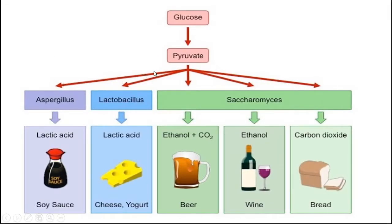This slide shows how glucose undergoes fermentation to produce pyruvate, which then undergoes fermentation by different microbes. Aspergillus and Lactobacillus produce lactic acid; lactic acid leads to the formation of cheese and yogurt. Saccharomyces cerevisiae helps in fermentation to produce beer, wine, and bread.